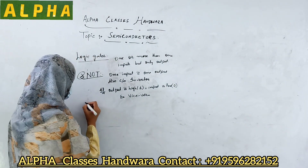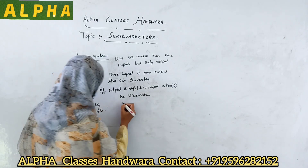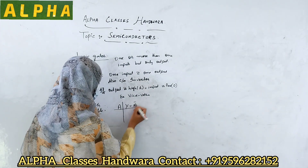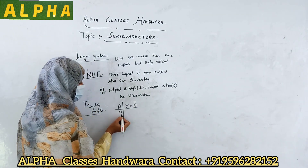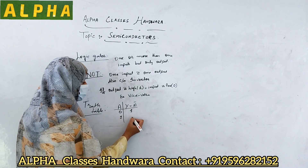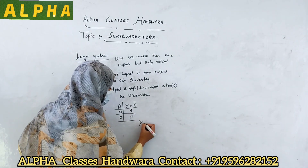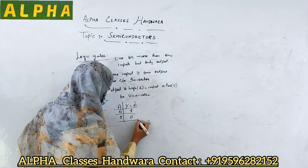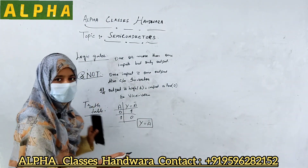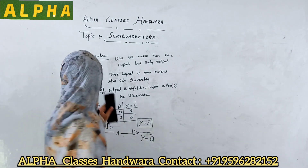Let us see the truth table for the NOT gate. If input is 0, that is low, output is high, that is 1. If input is 1, that is high, output is low, that is 0. In this manner, it inverts the input. Its Boolean expression is Y equals A-bar. This is the Boolean expression for the NOT gate. Let us see its symbol.